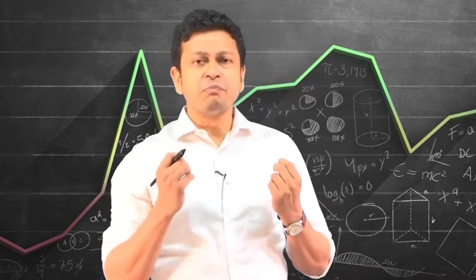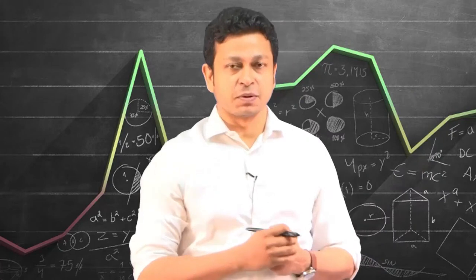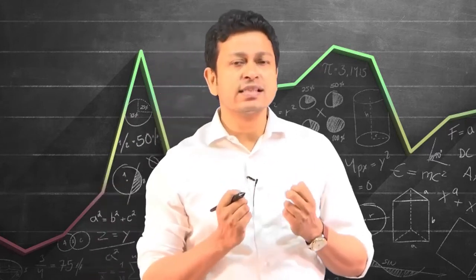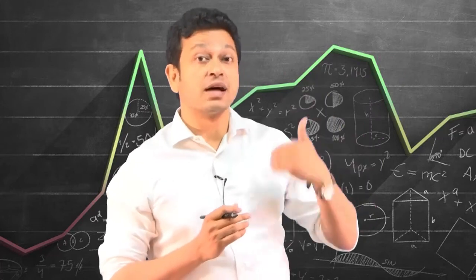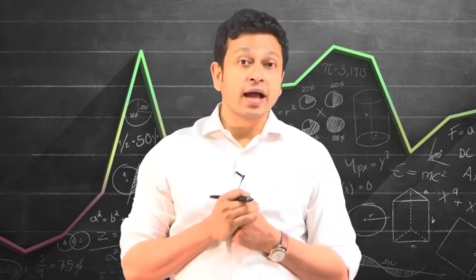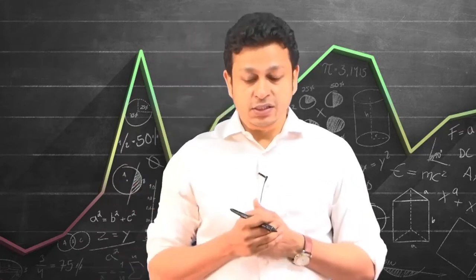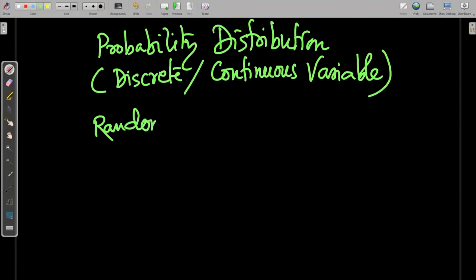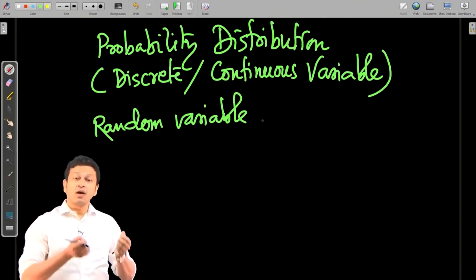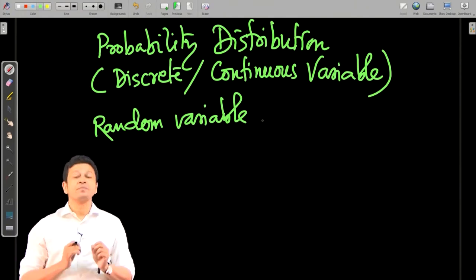What do we mean by probability distribution? We have been giving lots of examples of probability distribution, but what do we mean by it? By probability distribution, we have to remember a few things. Whenever I am talking in terms of probability, uncertainty, future events, or things which I have not done yet, then I actually talk about a random variable. A random variable has different values — the events will have different values when you do a random experiment. All the different values of the random variable along with their probabilities constitute a probability distribution.